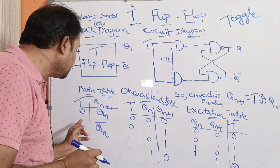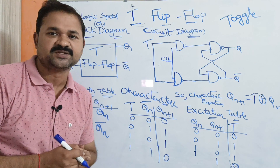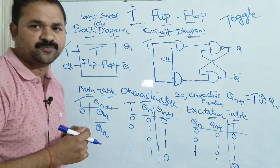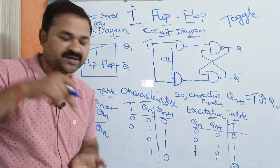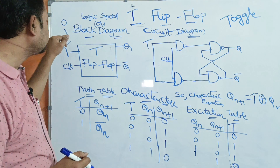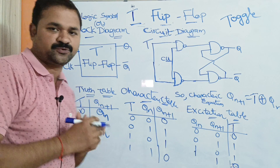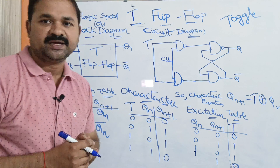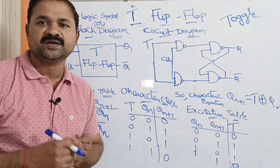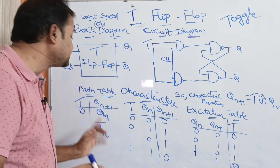If the input is 1, the next state output is the complement of the current state output. So if the input is 1 and the current state output is 0, the complement of 0 is 1, so the output is 1. If the input is 1 and the current state output is 1, the complement of 1 is 0. So: T=0 gives Q(n+1) = Q(n), and T=1 gives Q(n+1) = Q(n)-bar.